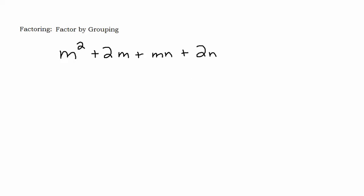With the factor by grouping technique, the first thing you're going to do is group some of the terms together. Usually if there's four terms you're going to group the first two and the last two terms together and leave the plus sign in the middle. Now if this is a minus sign right here we're going to have a little bump in the road — we'll talk about that in a minute. Then we'll look at the first two terms and ask: do they have a common factor?